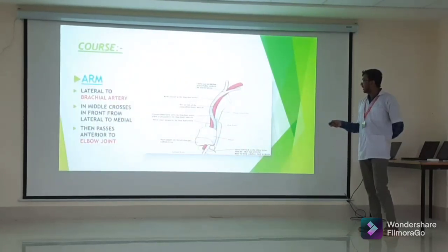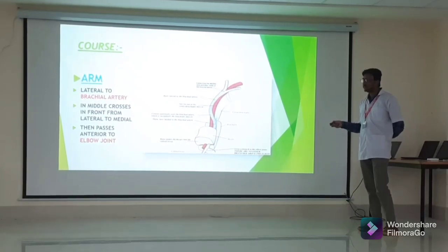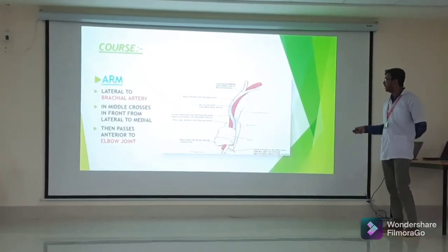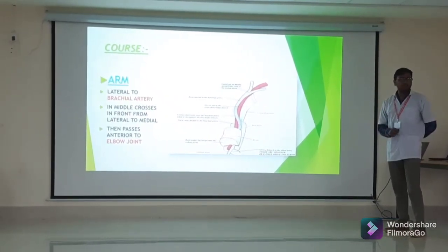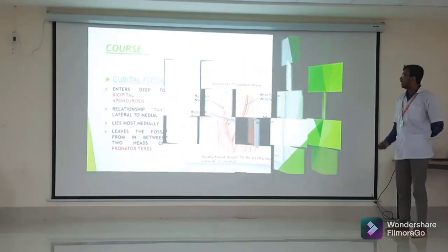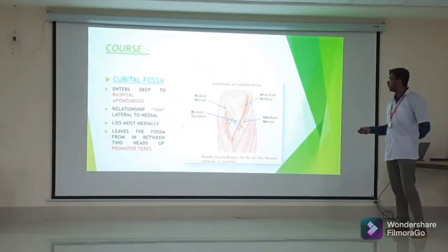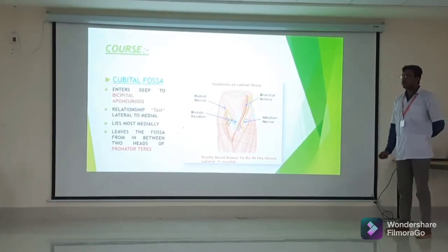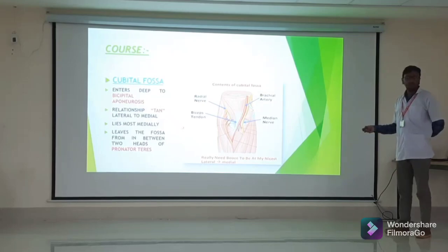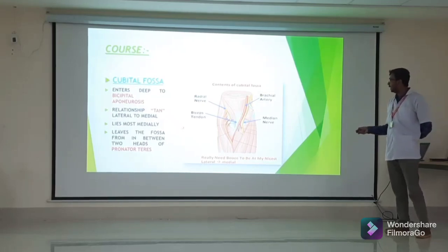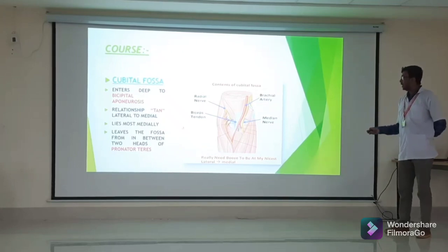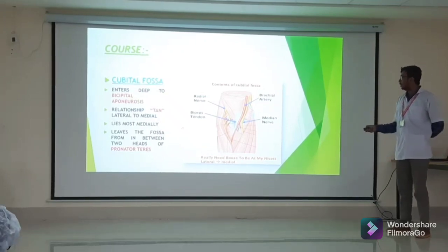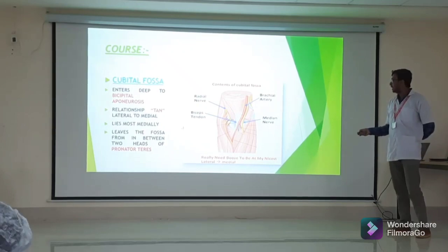The median nerve enters the arm lateral to the brachial artery. In the middle of the arm, it crosses in front of the artery from lateral to medial side, then passes anterior to the elbow joint. It goes inside the cubital fossa deep to the bicipital aponeurosis, forming a major relationship called TAN — tendon of biceps brachii, brachial artery, and median nerve — from lateral to medial, where the median nerve lies most medially. It then leaves the fossa between the two heads of pronator teres.